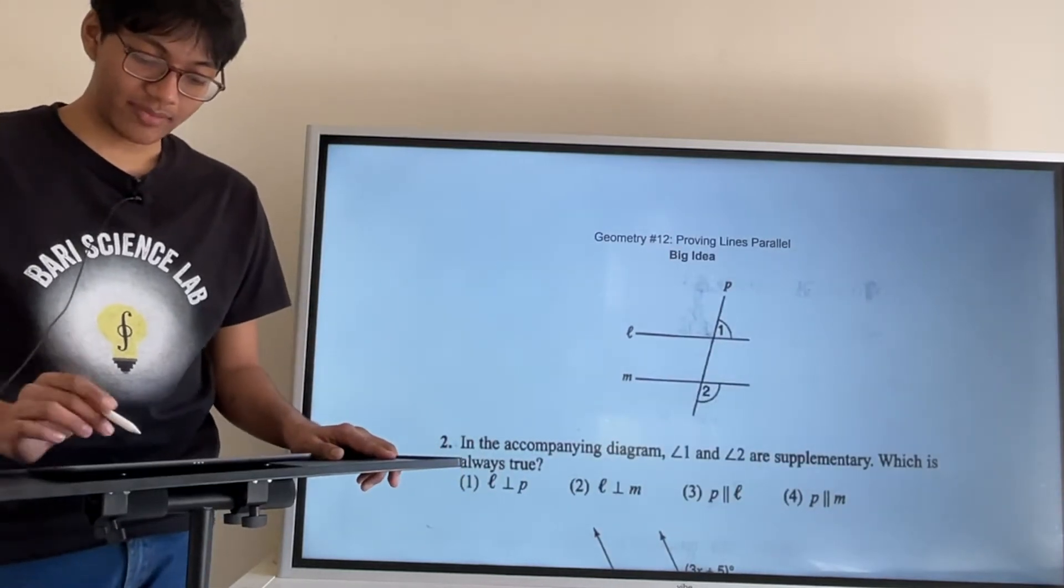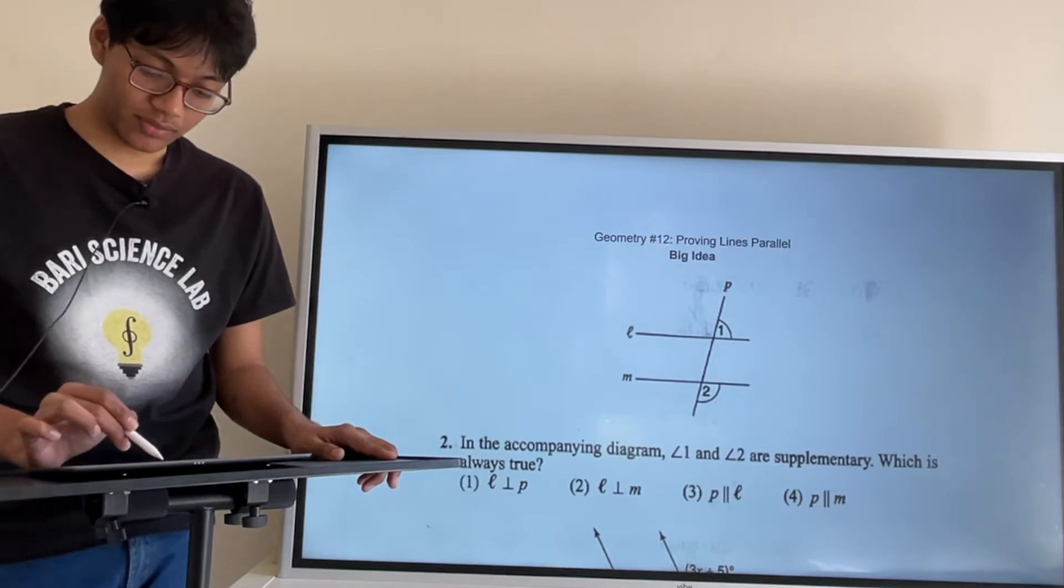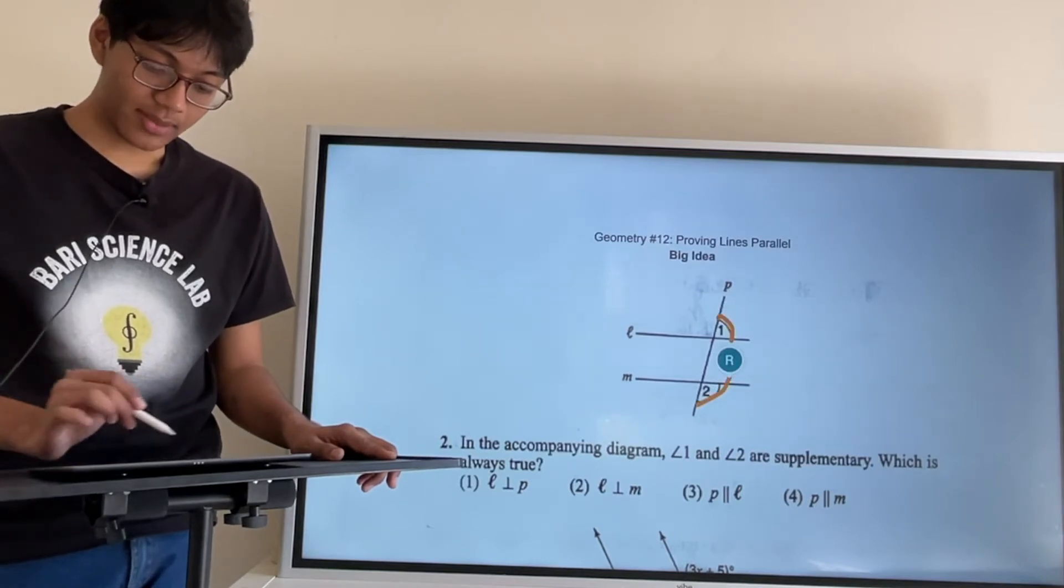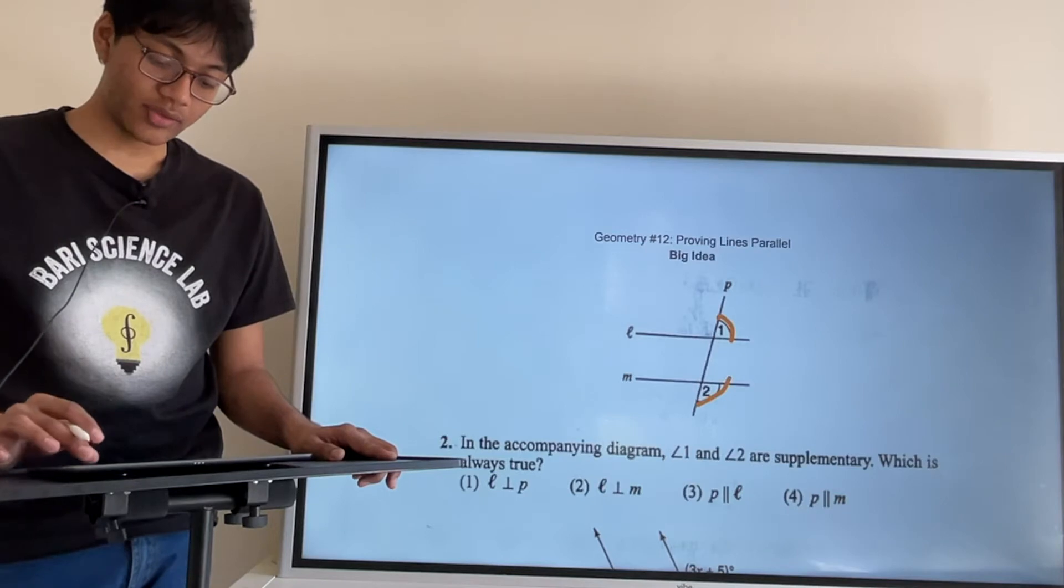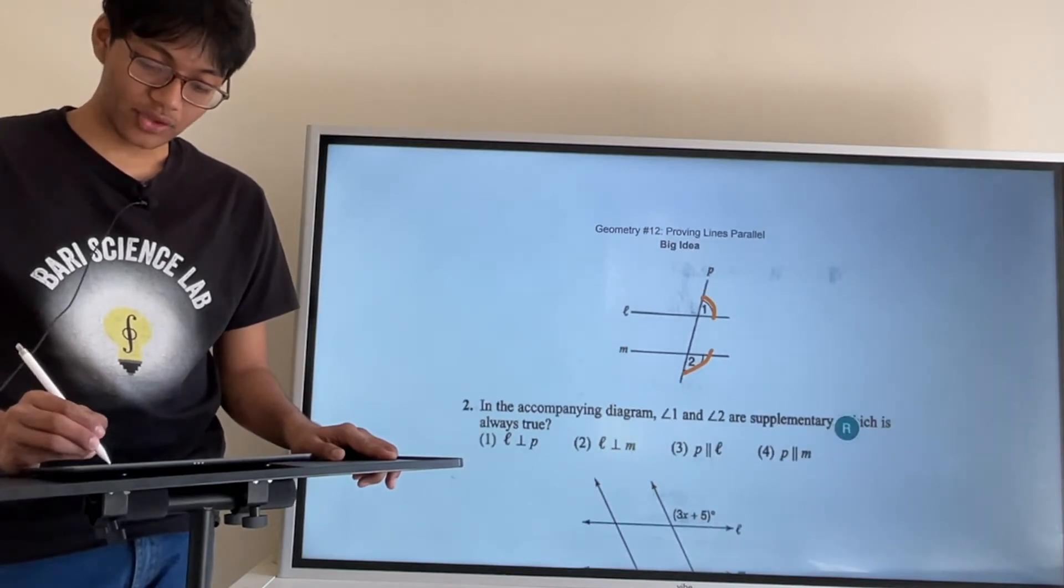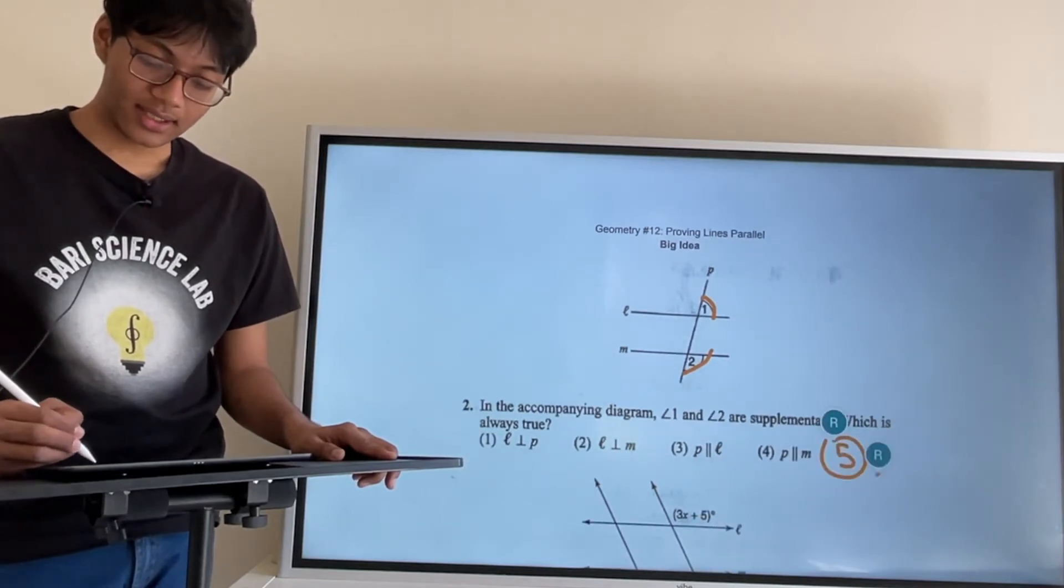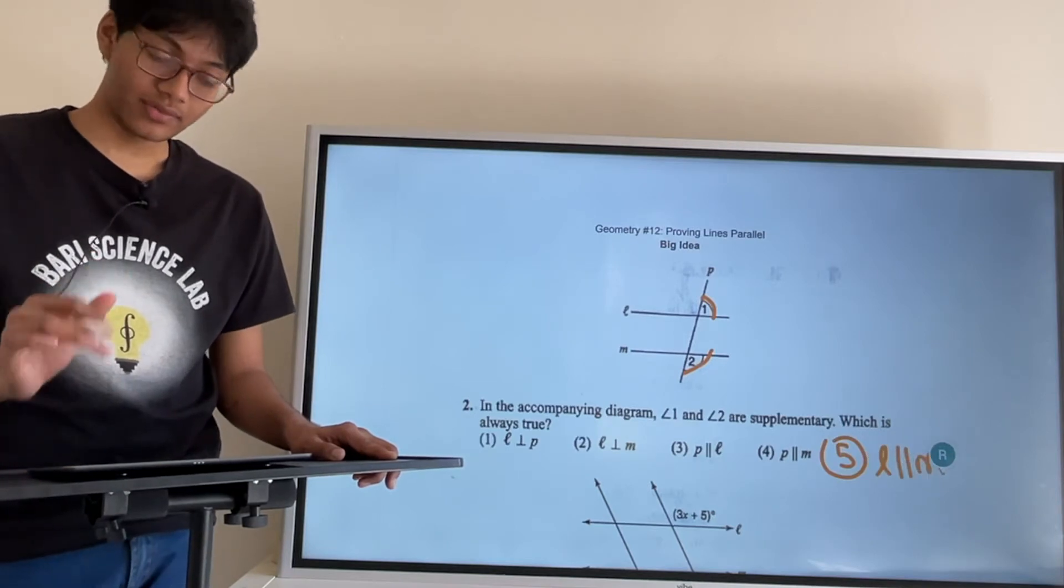In the accompanying diagram, angles one and two are supplementary. Which of the following is always true? And by the way, there should be a fifth answer choice, and that should say L is parallel to M. Okay, so keep that in mind.